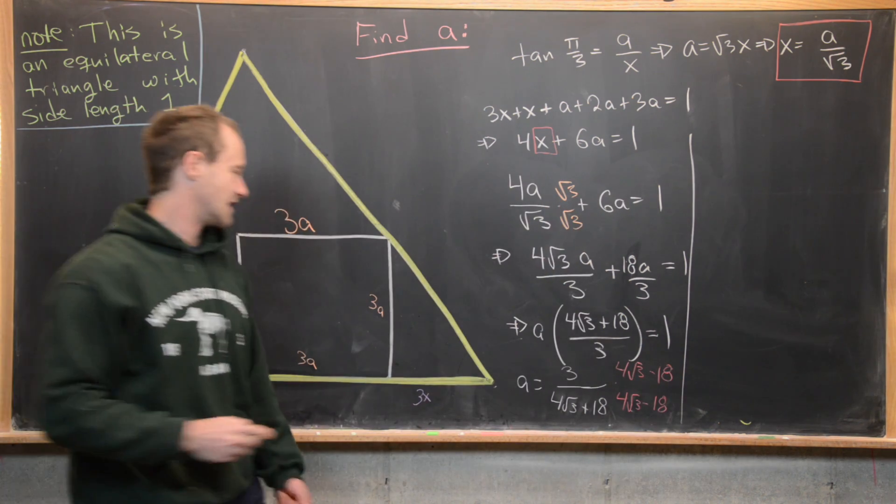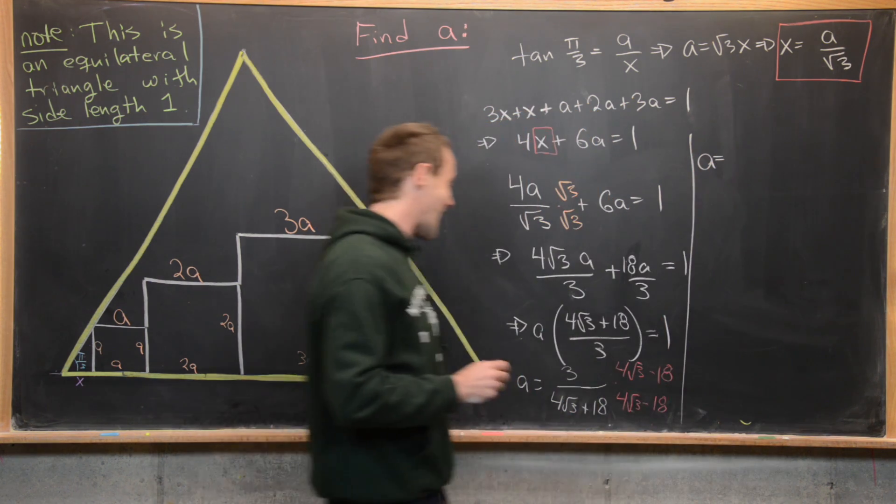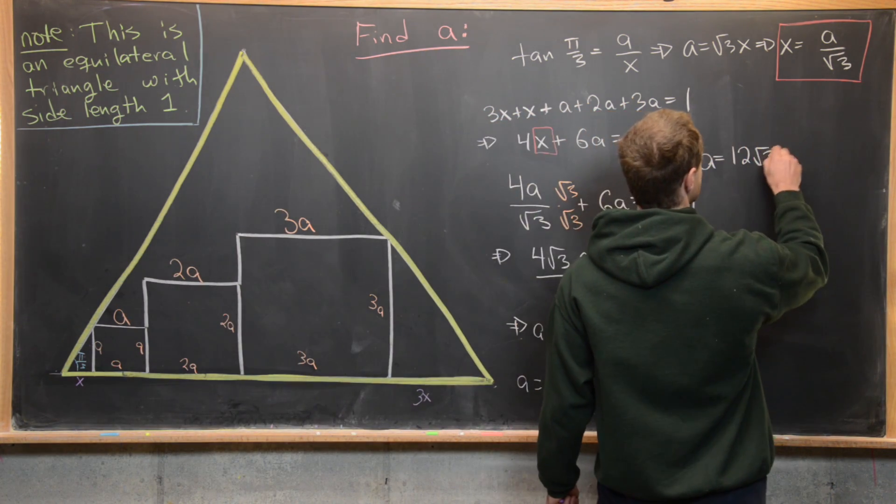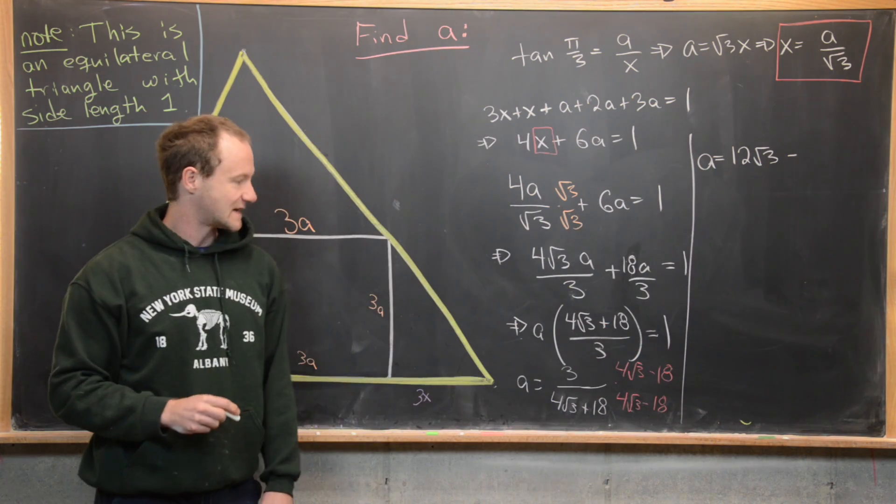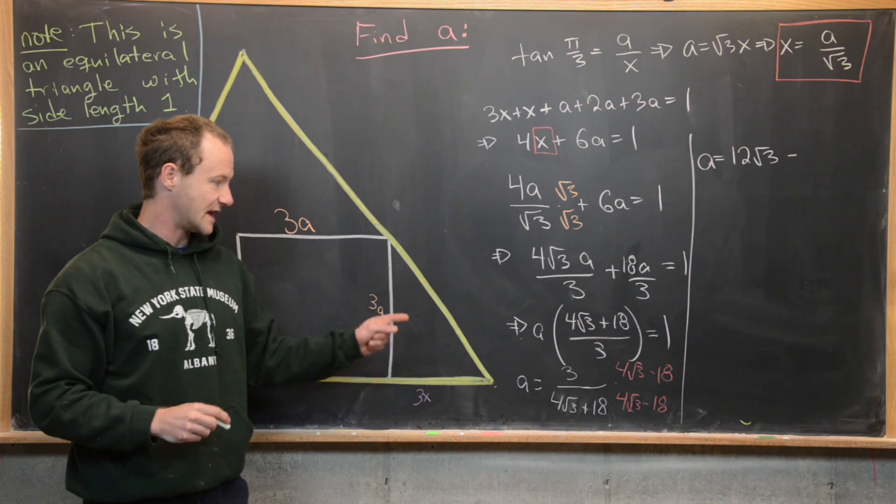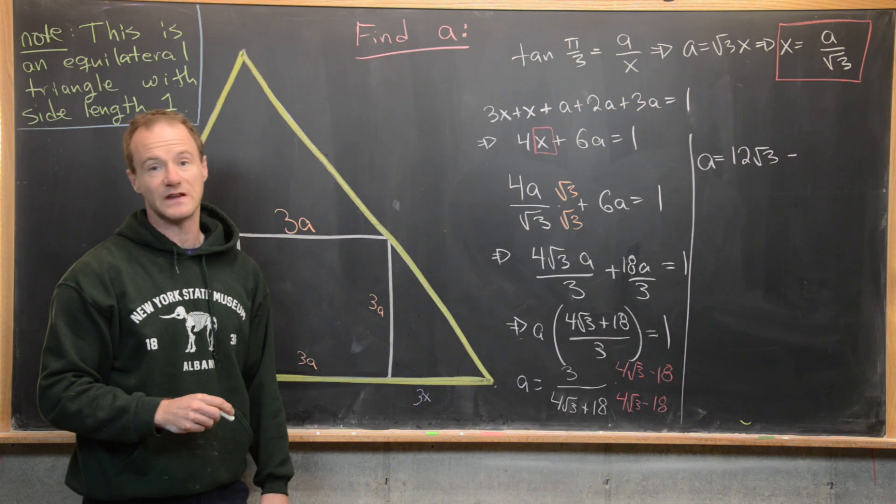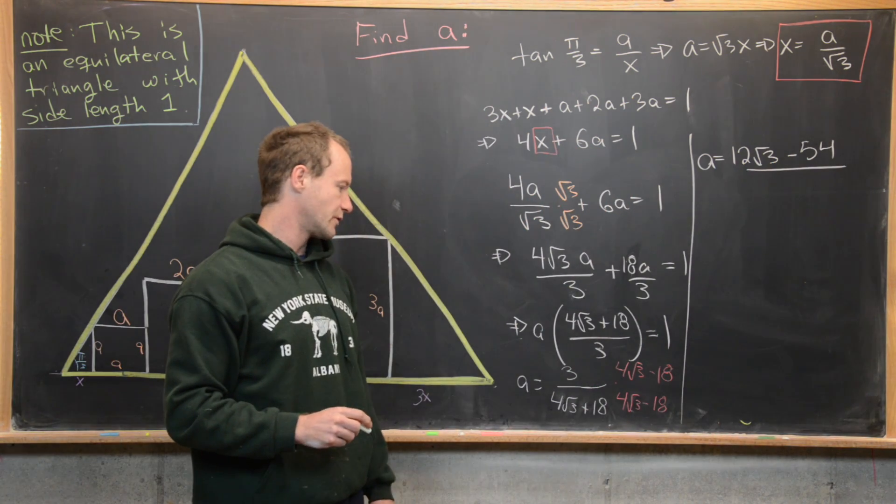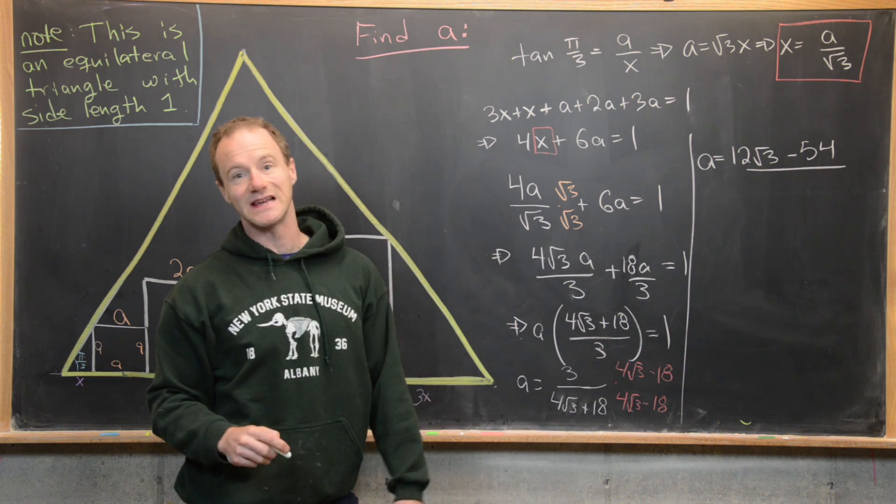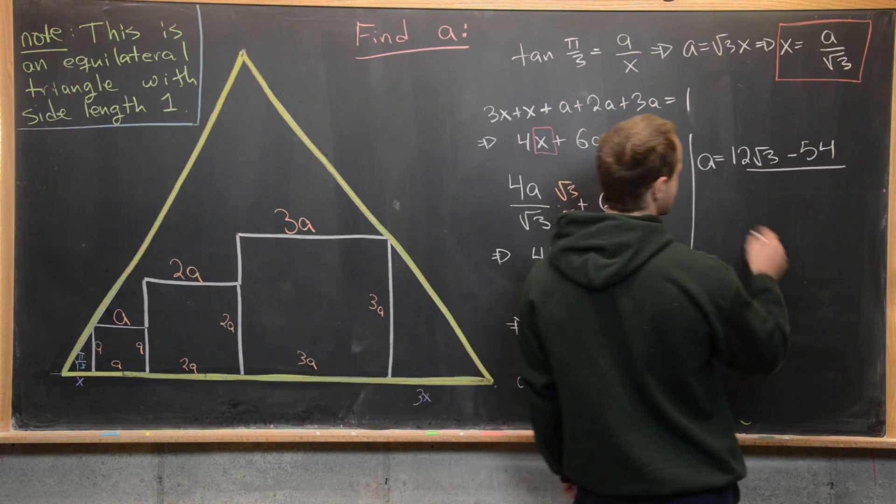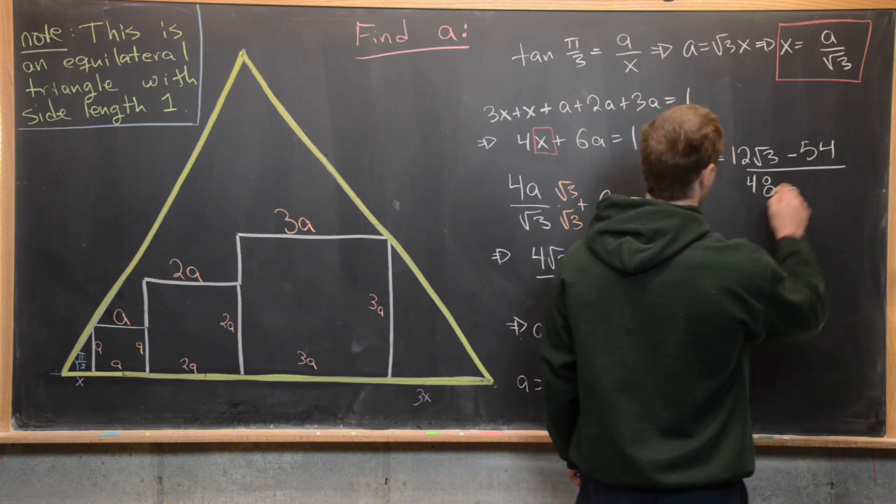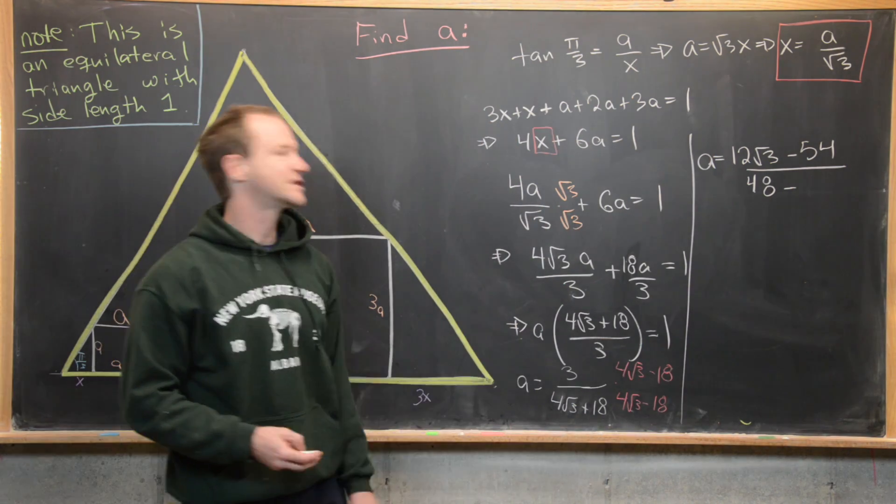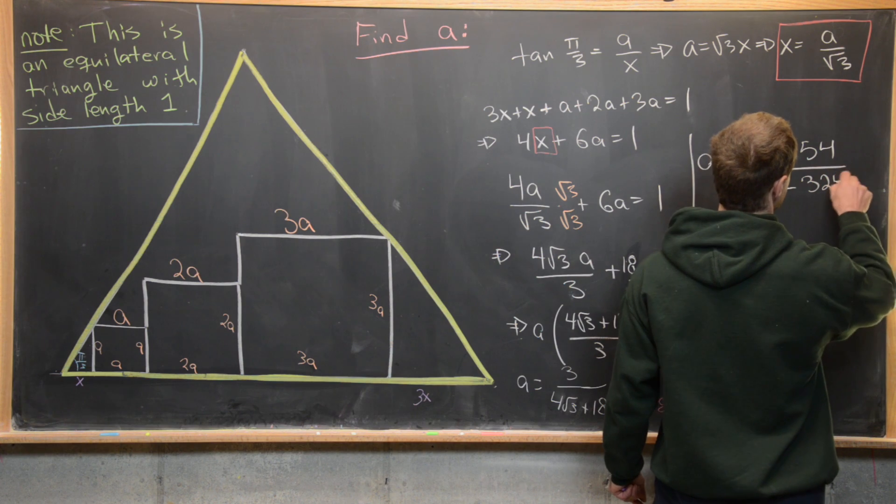So let's see what that gives us. That's going to finally give us a is equal to, so this is going to be 12 times root 3 minus 3 times 18, so let's see what that is, so 3 times 18 is going to be 54 over now we're going to have 4 root 3 times 4 root 3 so that's going to be 16 times 3 so 16 times 3 is 48 minus 18 squared and 18 squared is 324.